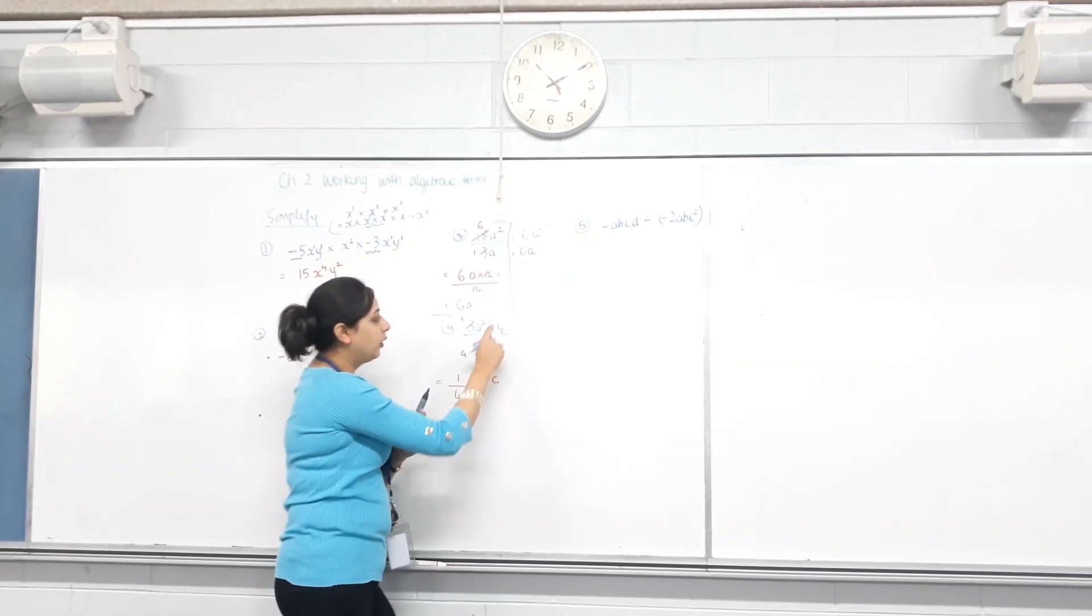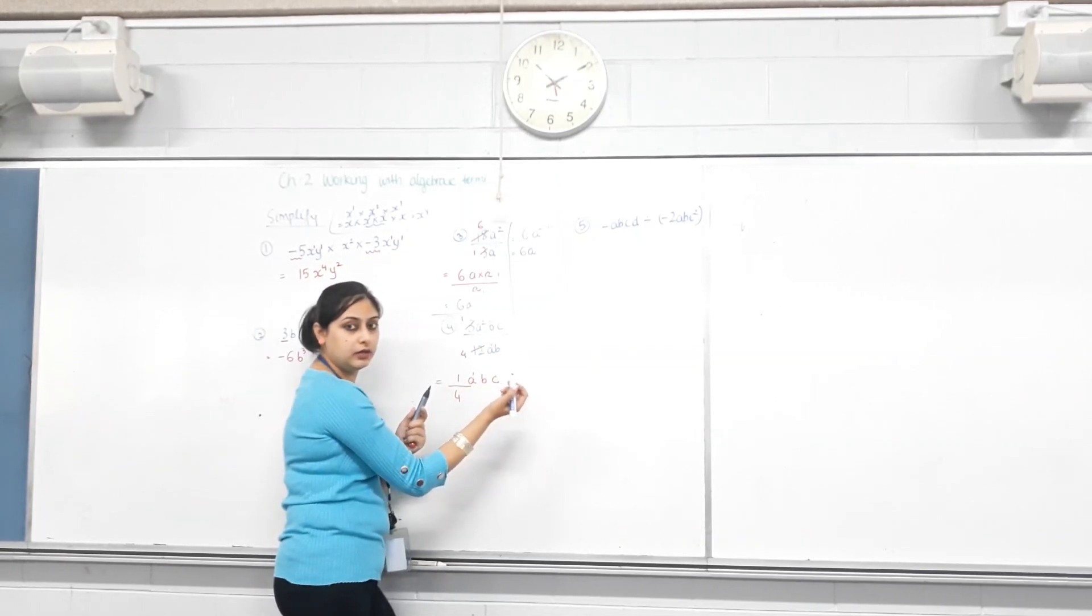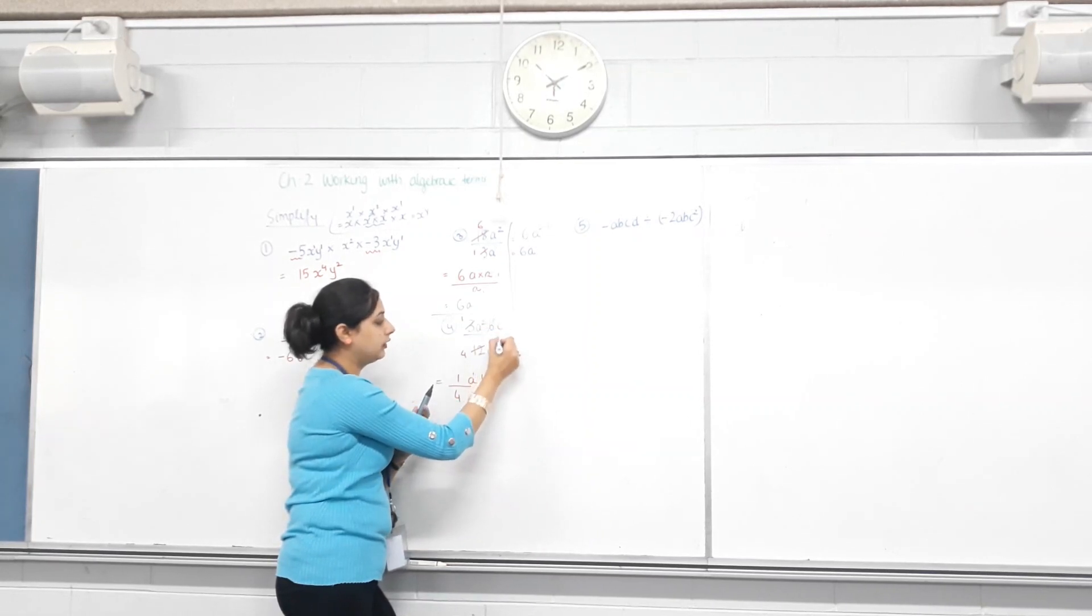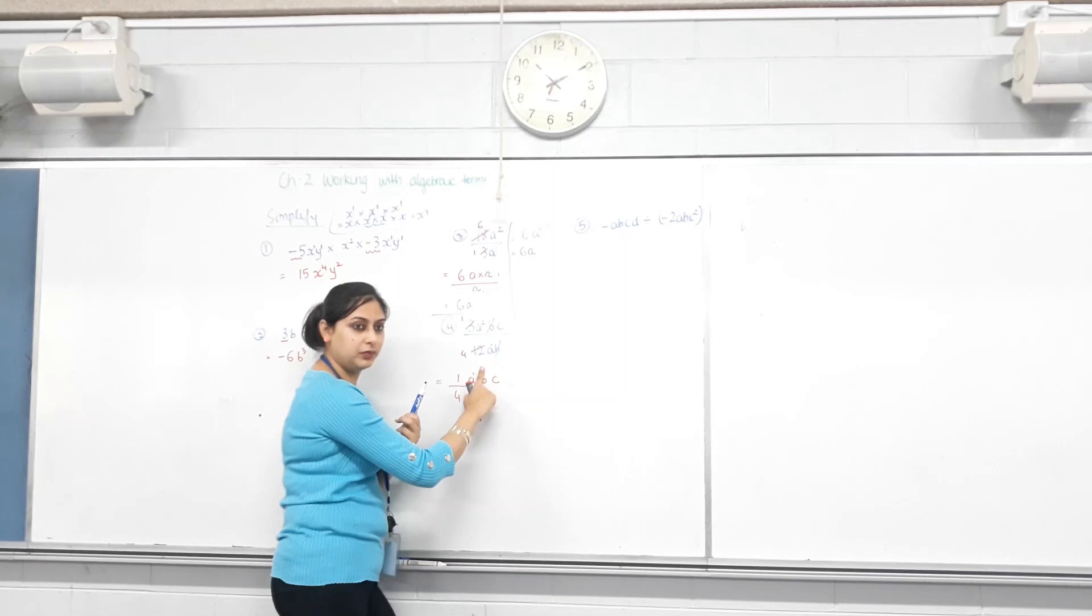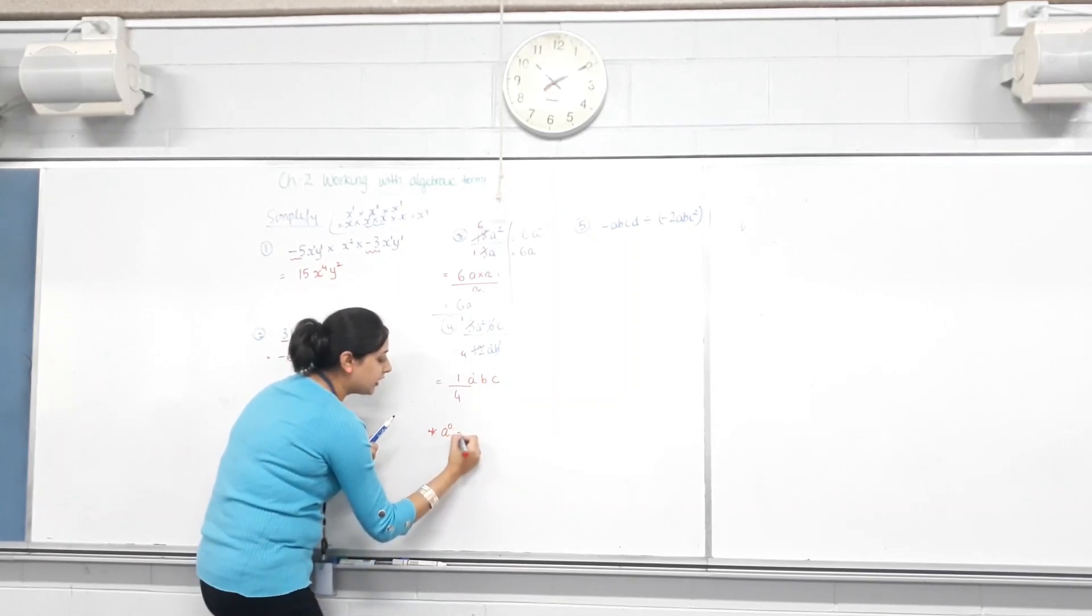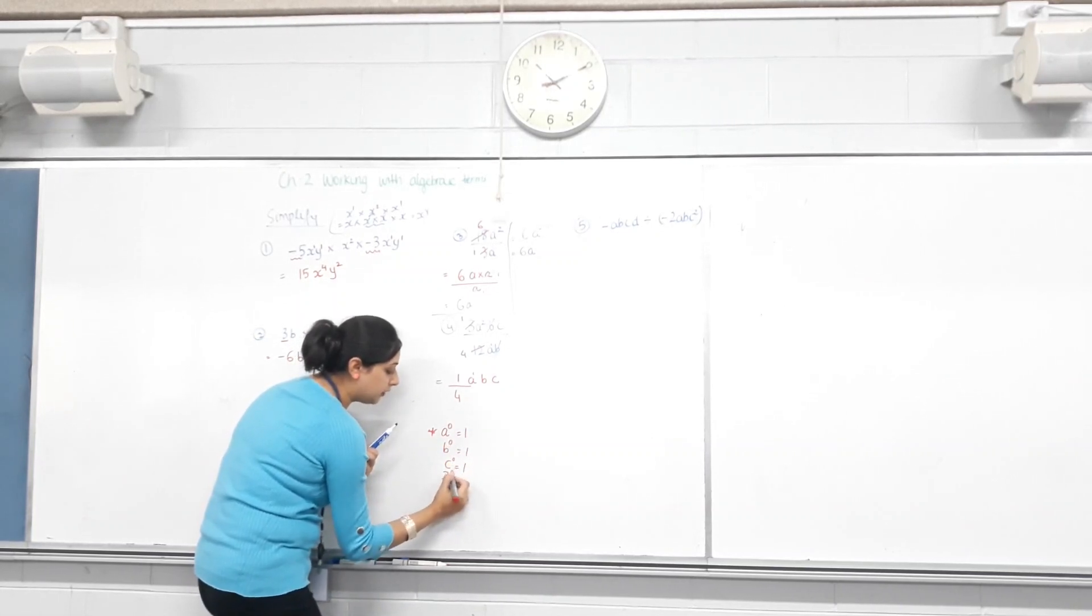Power of B? One. B? One. What's 1 take away 1? Zero. What's B to the power of 0? One.